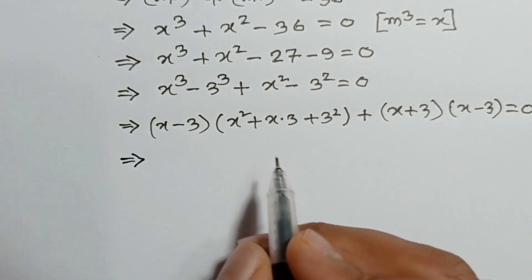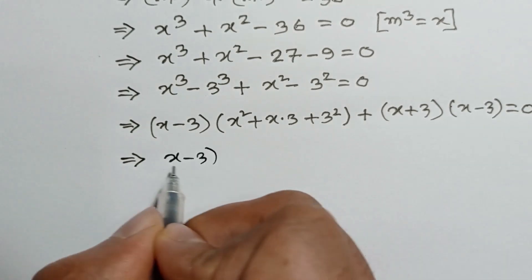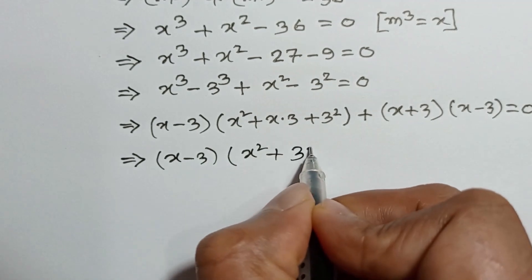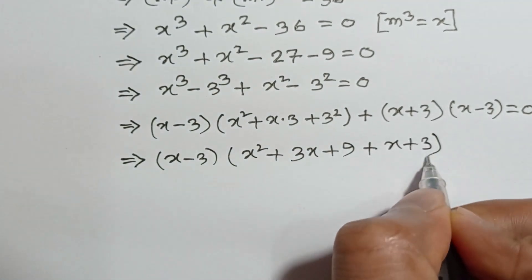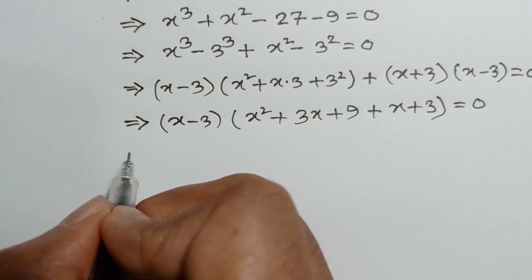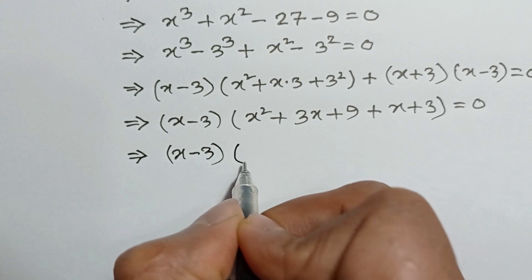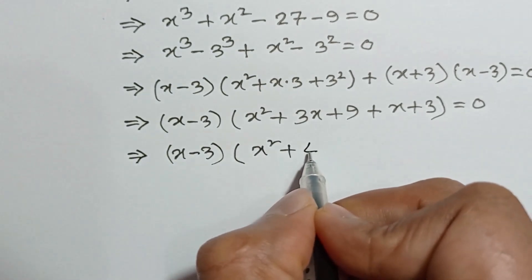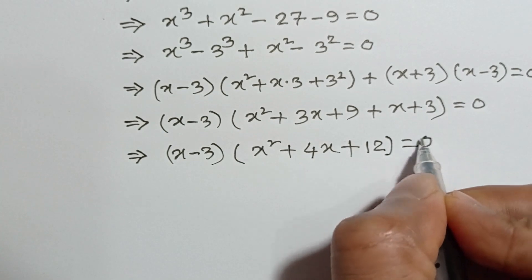Taking (x minus 3) as a common factor, we get (x minus 3)(x squared plus 3x plus 9 plus x plus 3) equals 0. Combining like terms: x squared plus 3x plus x equals 4x, and 9 plus 3 equals 12, giving (x minus 3)(x squared plus 4x plus 12) equals 0.